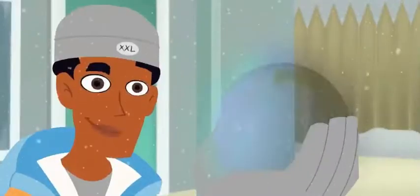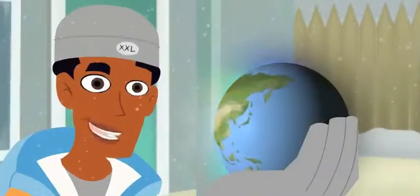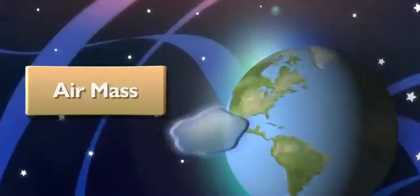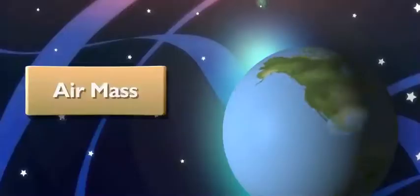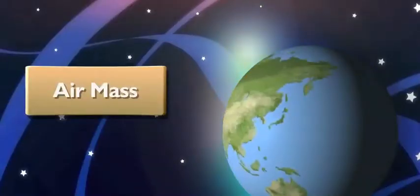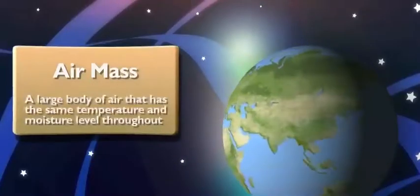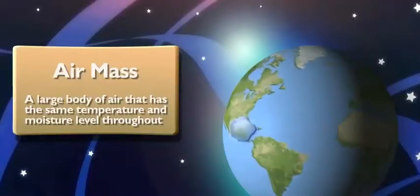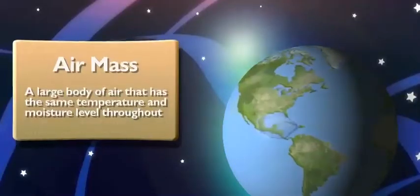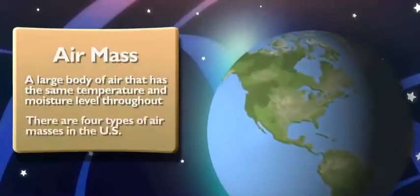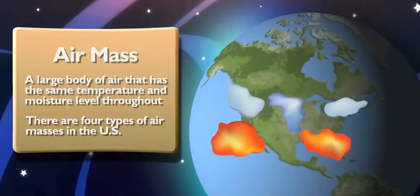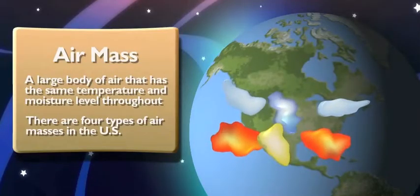I'm not going to throw it at you. Listen, you know what an air mass is, right? A big, massive blob of air? Kinda. An air mass is a large body of air that has the same temperature and moisture level throughout. There are four different types of air masses in the United States, and each one carries its own temperature and amount of moisture.